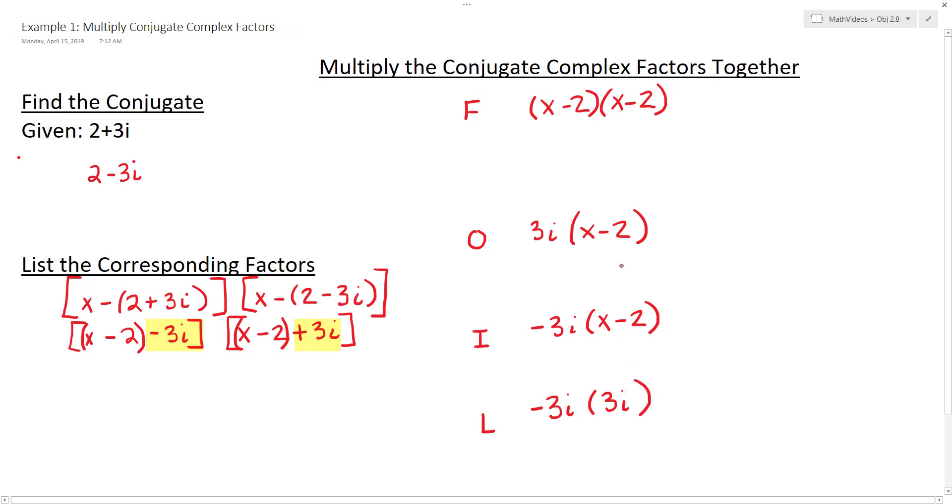And what I want you to notice on the outside and the inside pieces, they're basically identical except for the fact that for the outside piece it's positive and for the inside piece it's negative. So if you were to distribute the 3i for the outside piece and the negative 3i for the inside piece, and then combine your like terms together,